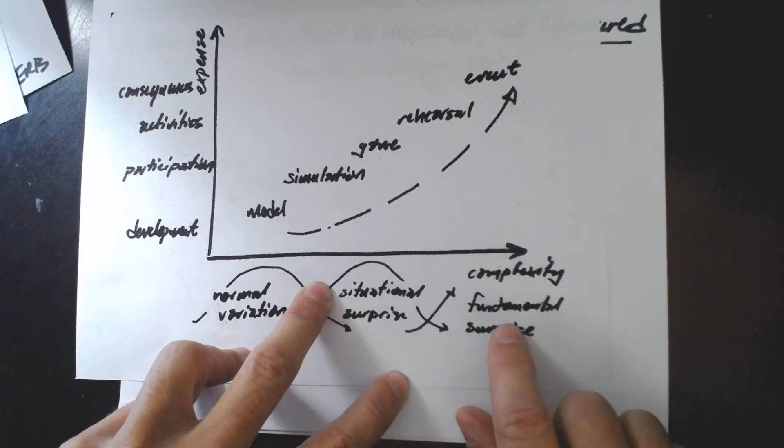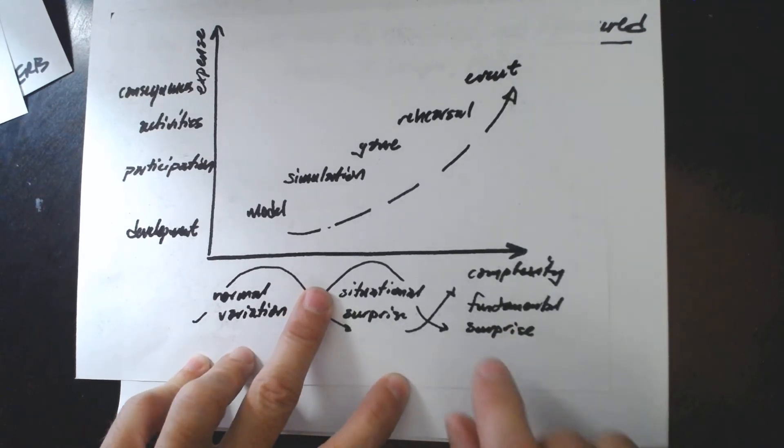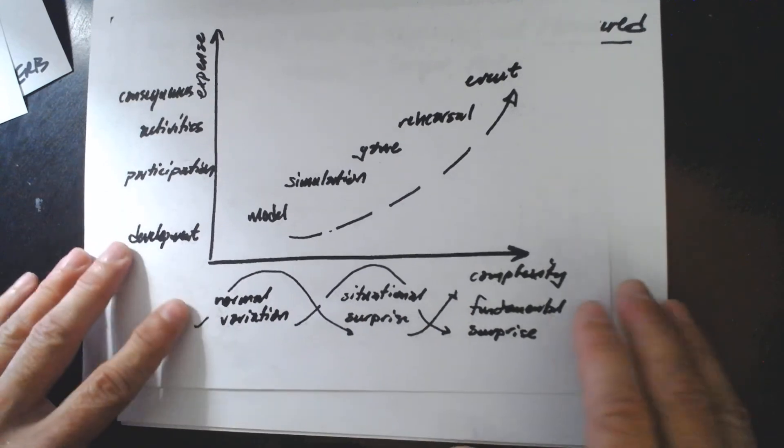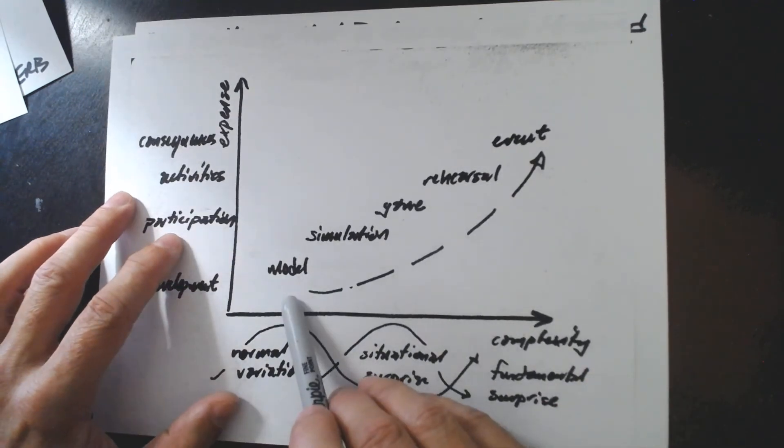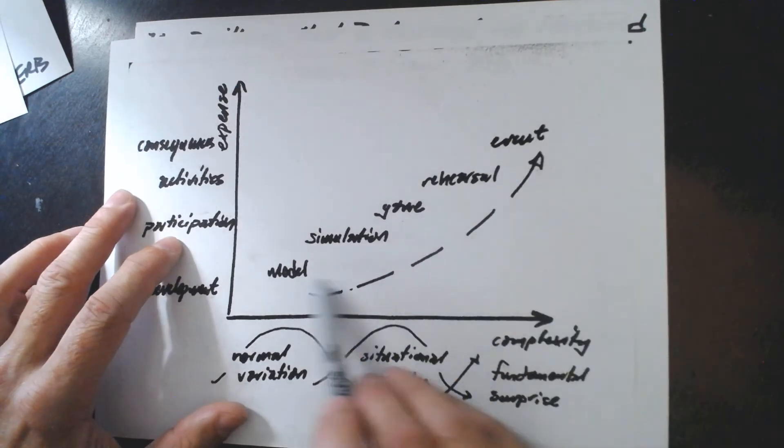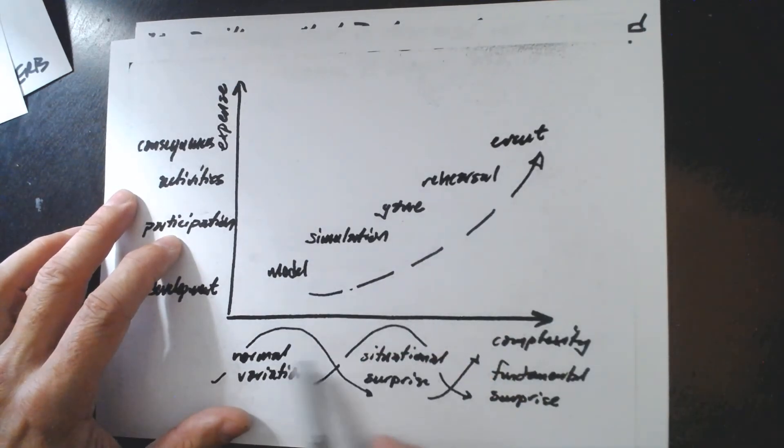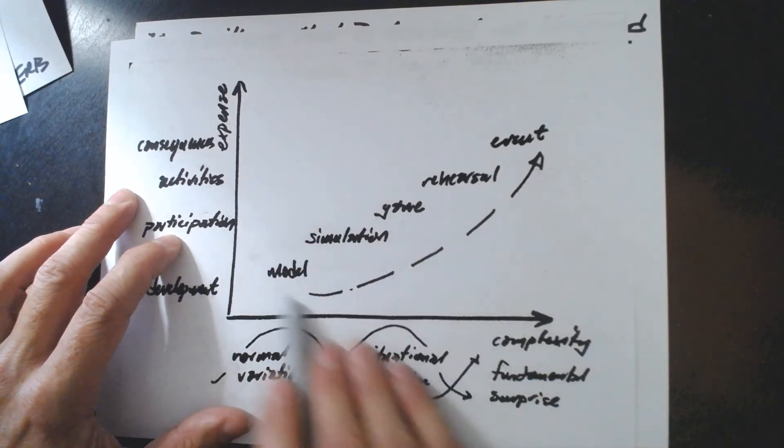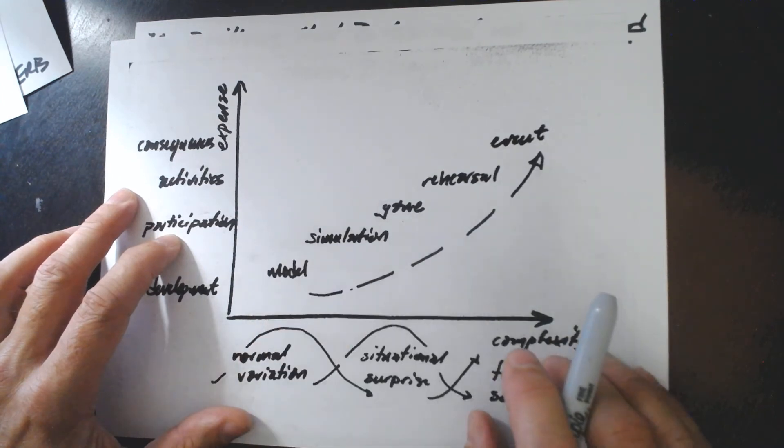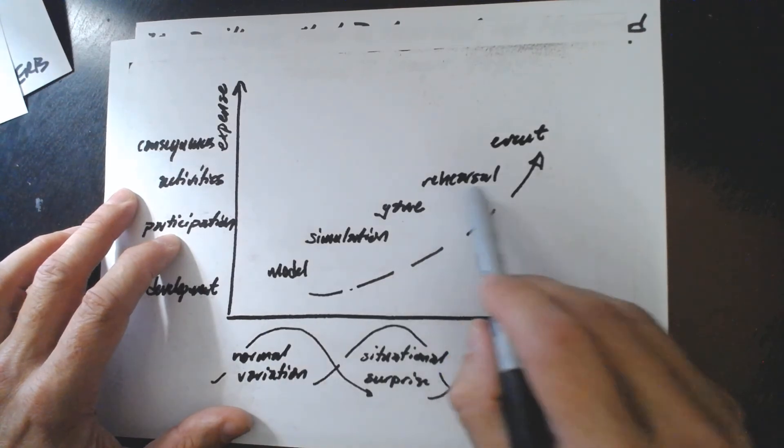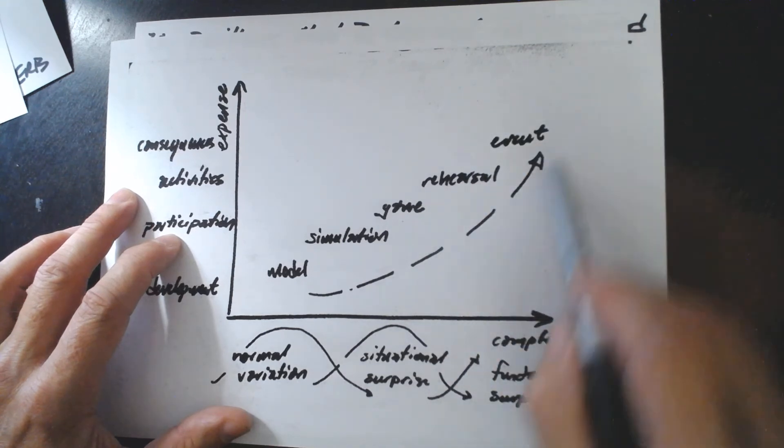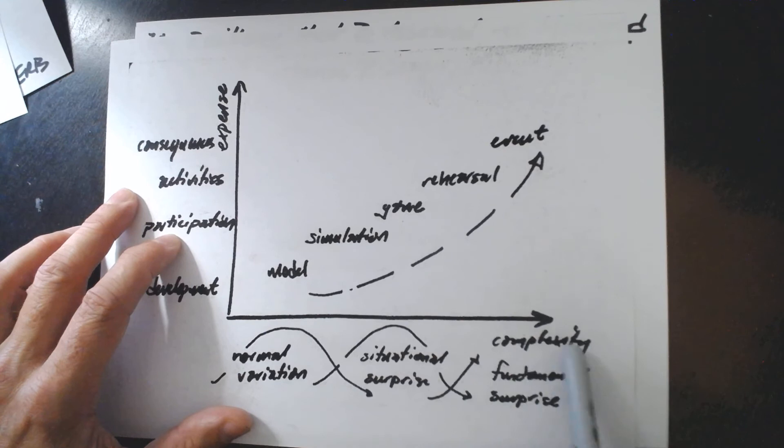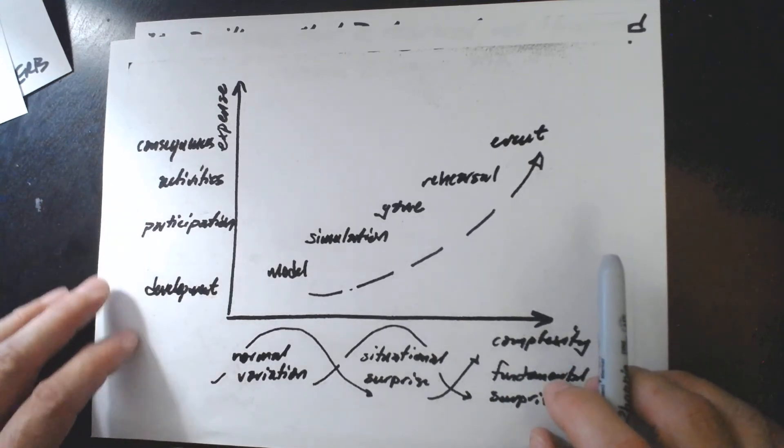But suppose you won the lottery and you never bought a ticket. That's what we call fundamental surprise. Fundamental surprise happens when we are confronted with situations that we thought were impossible. So in these different settings in which we want to observe the verbs of resilience in action. At the model in the simulation, we can investigate normal variation. We can investigate situational surprise. But we are unlikely to discover those fundamental surprises that open our eyes. That make us aware of new possibilities we thought never existed. To do that, we must rehearse or experience events. Because it is in the most complex context in which the fundamental surprise can be revealed.